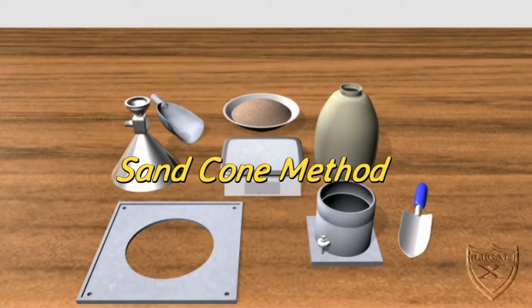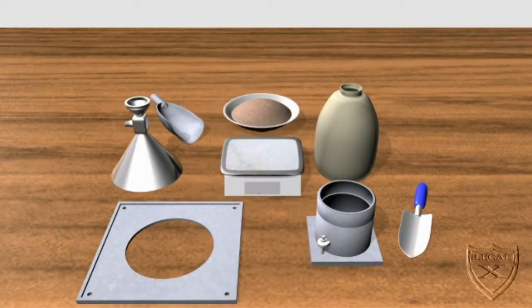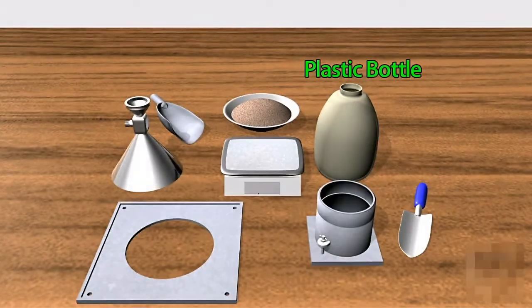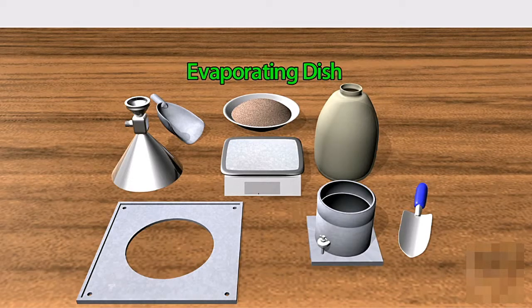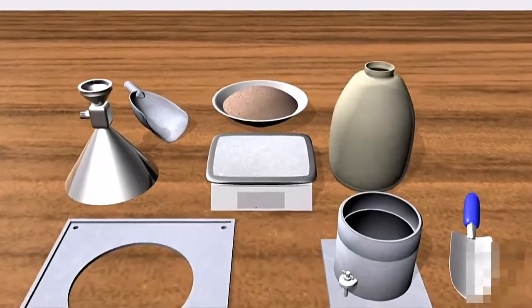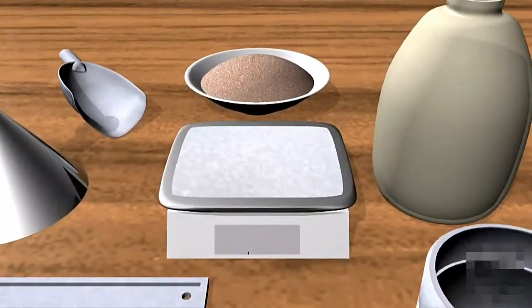The following presentation demonstrates the use of the sand cone method to determine the moisture content of soil. We're using a sand cone, baseplate, trowel, and evaporating dish. The first calculation we need to make is to determine the dry weight of the sand being used.